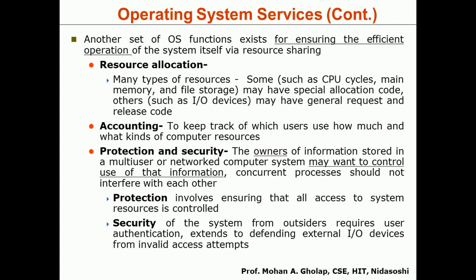The first service in the second set is Resource Allocation. Modern computer systems are multiprocessing and multitasking — many processes and tasks execute simultaneously. The resources of the computer system are shared among different devices and processes. The OS provides the mechanisms required for this through resource allocation. Resources include CPU cycles, main memory, and file storage. Some have special allocation code; I/O devices may have general request and release mechanisms.